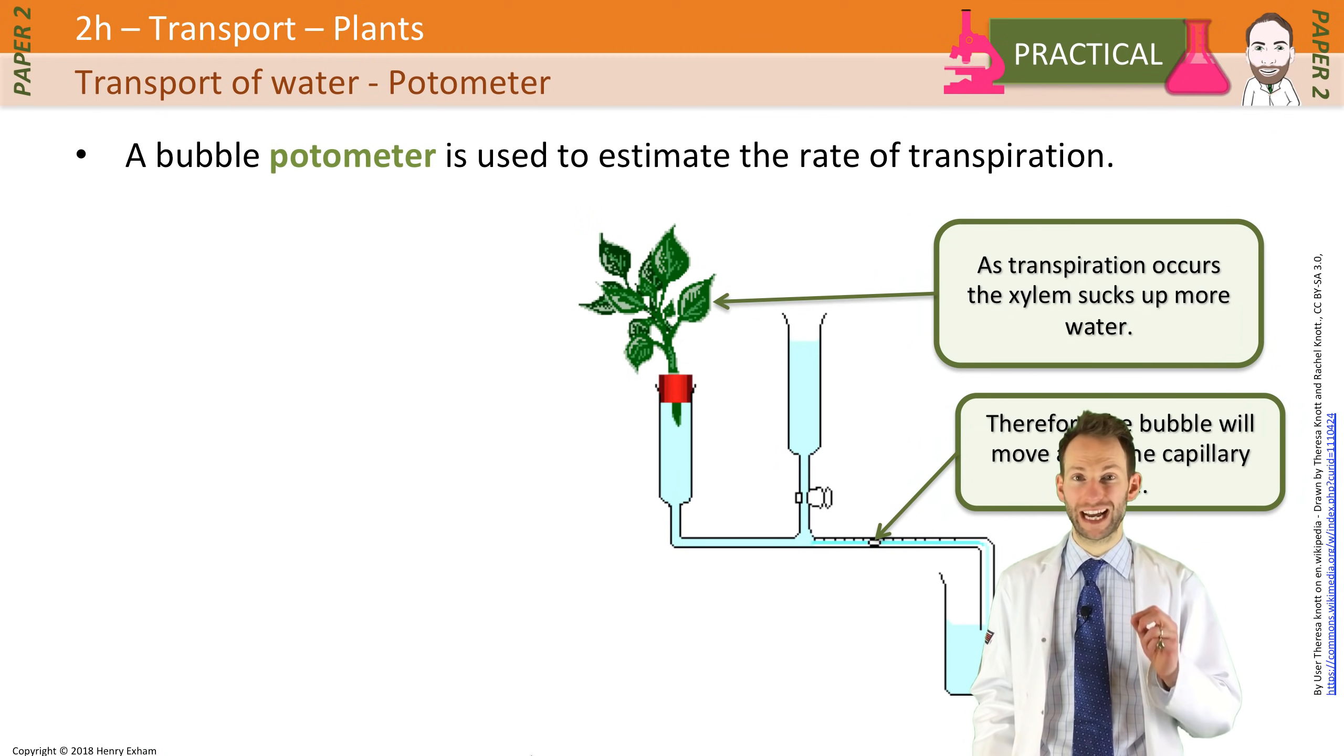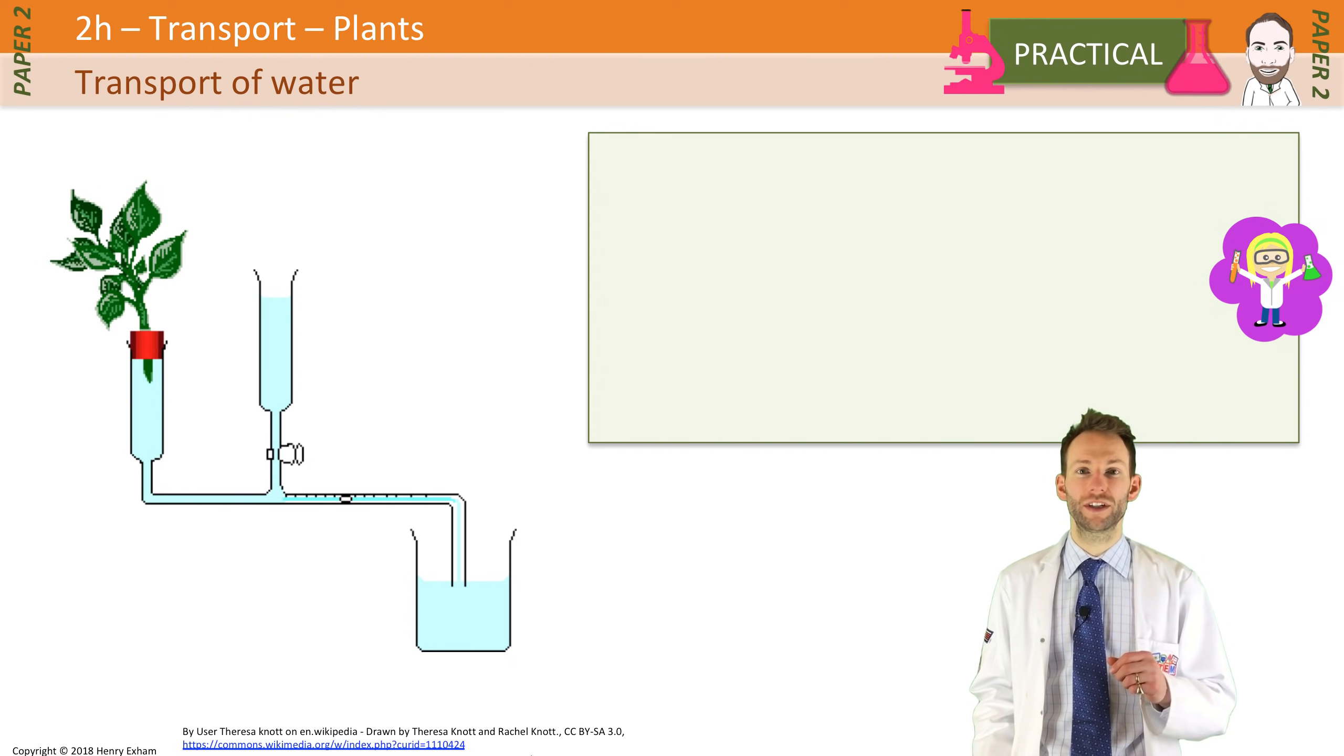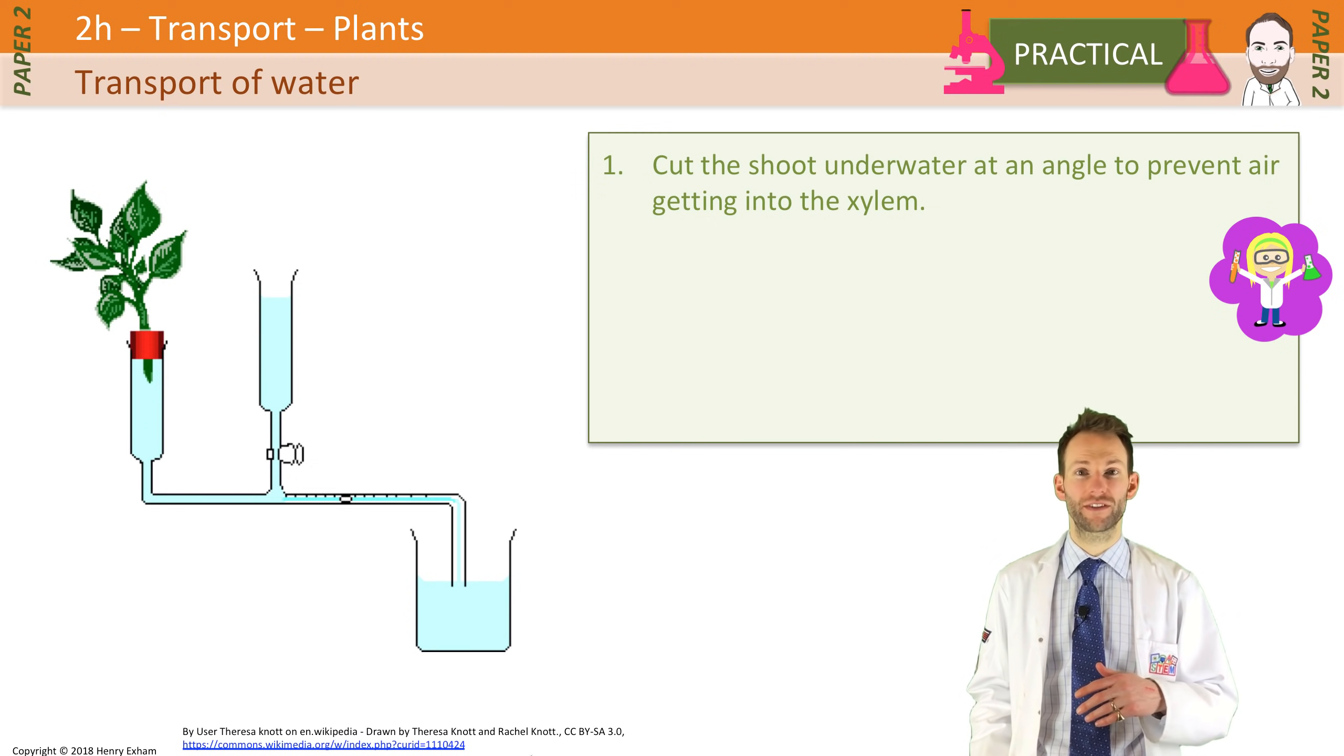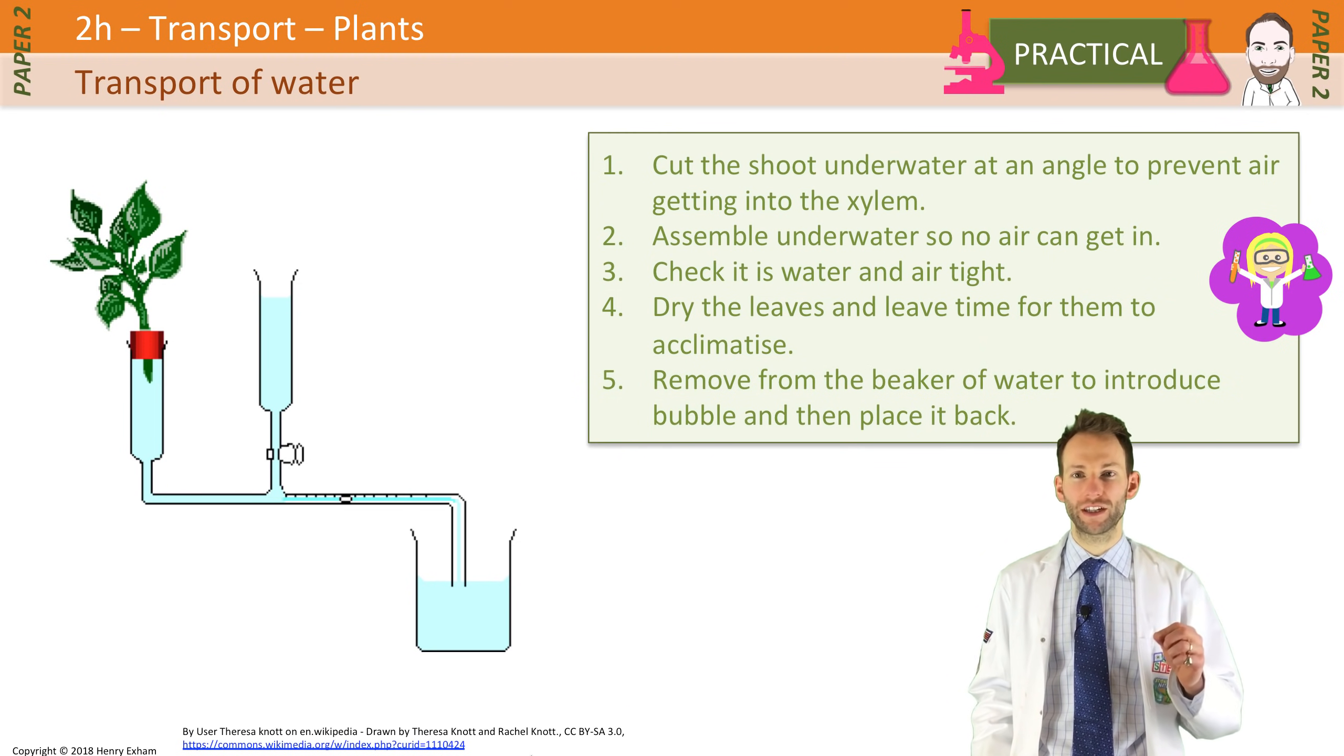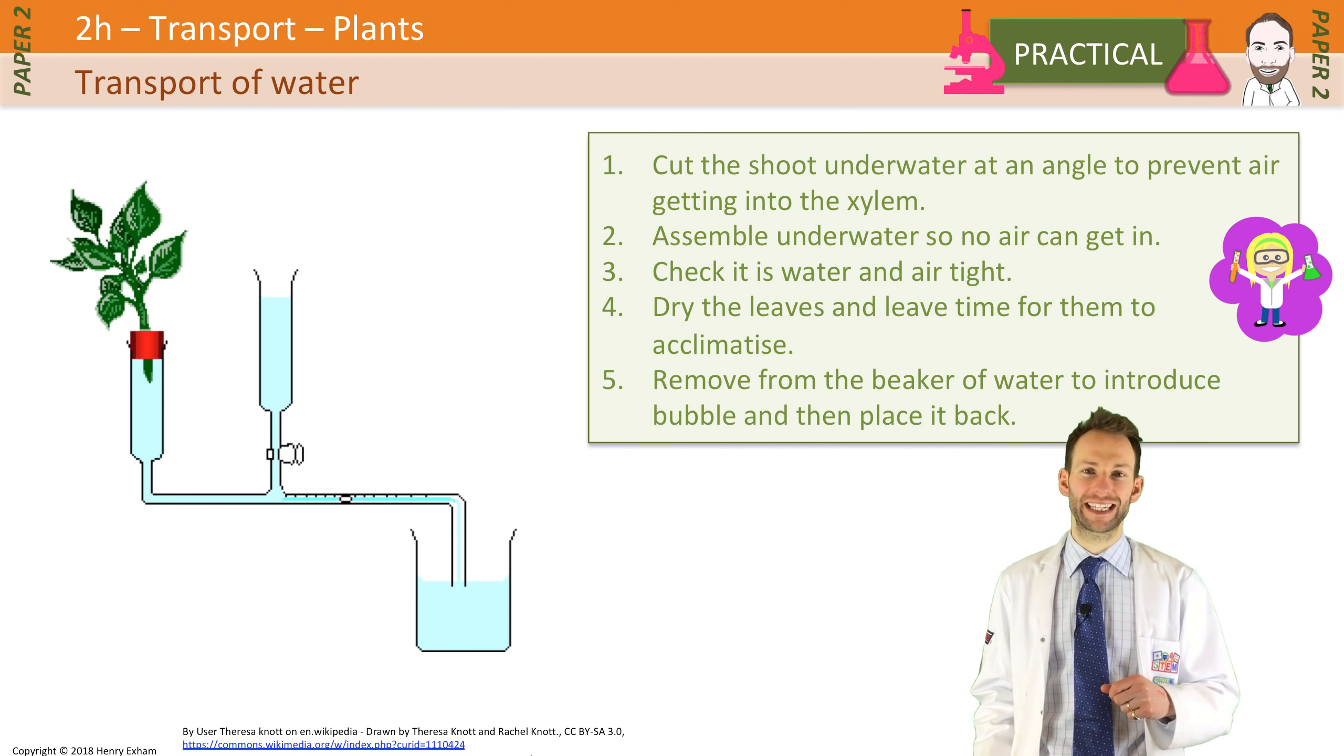There's a couple of things you need to know specifically about how to set up this apparatus as well, because it's quite a tricky piece of apparatus to set up. You need to cut the shoot underwater at an angle to prevent air getting into the xylem. Very important. Assemble the apparatus underwater as well, so no air can get in. Check that it's water and airtight. Dry the leaves and leave time for them to get acclimatized to whatever the environment is that you're going to be testing them in. And then remove from the beaker of water for a certain amount of time, which will allow a little air bubble to be introduced in the capillary tube, and then put the beaker of water at the end there back again.